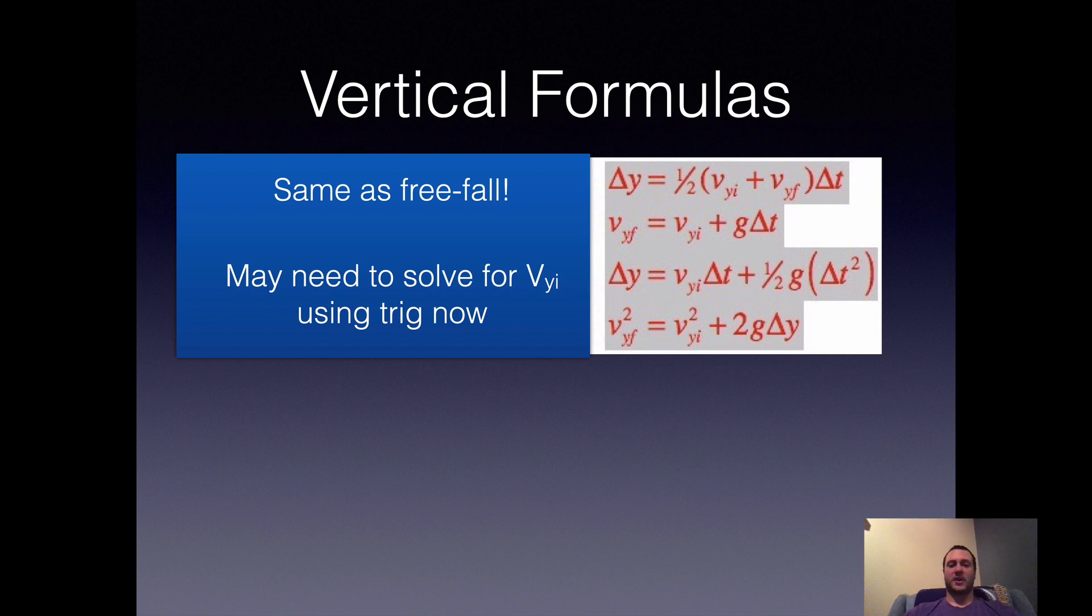When we launch at an angle, we're moving upward at the launch point or potentially downward, and we're going to have to include that variable. For VYI, you may solve it algebraically, or you may need to use a little bit of trig.